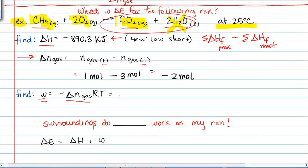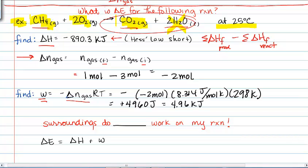So when we plug that in here, that's negative times our change in the moles of gas is negative 2 moles times 8.314 joules per mole Kelvin times our temperature, which is 25 degrees. We change it into Kelvin, 298 Kelvin. And that's equal to a positive 4,960 joules, or 4.96 kilojoules. So what that means is that the surroundings, because it's a positive number, the surroundings are doing 4.96 kilojoules of work on my reaction. And that's because it's a positive. The surroundings are doing work on the system.